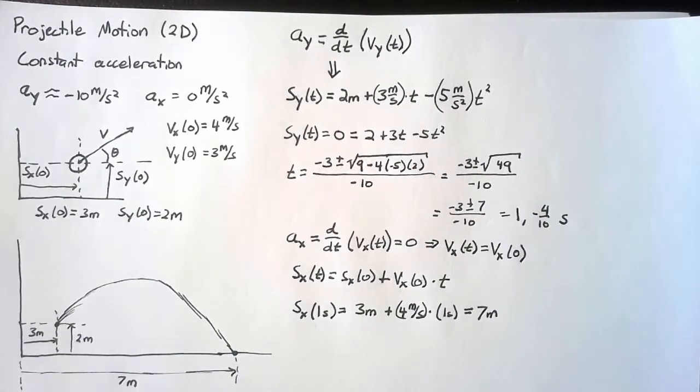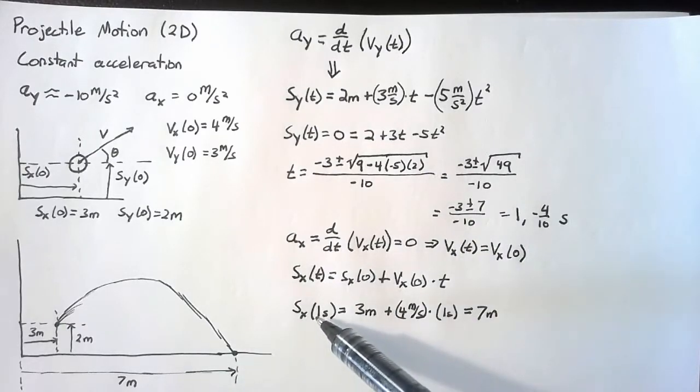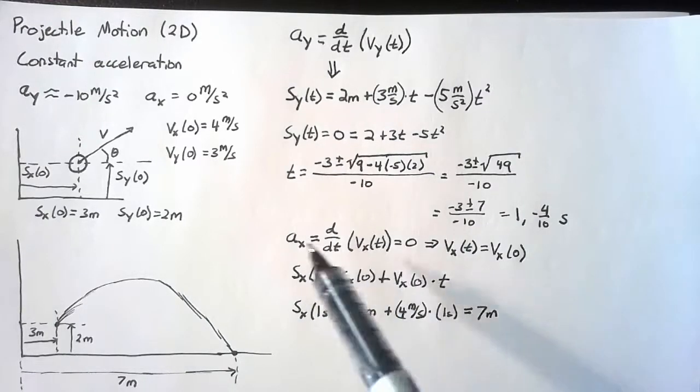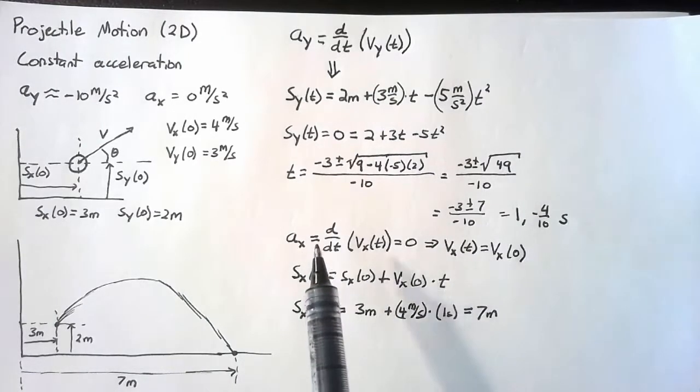So not much changed here between the 1D and the 2D. We asked a slightly different question. We asked what time the ball would hit a specific height. But once we found that, finding the x location was very straightforward.